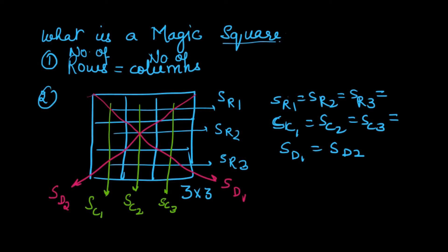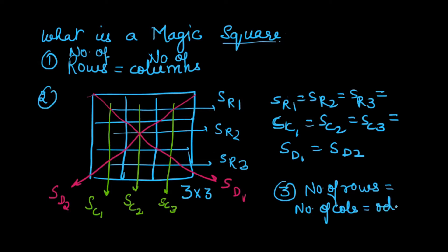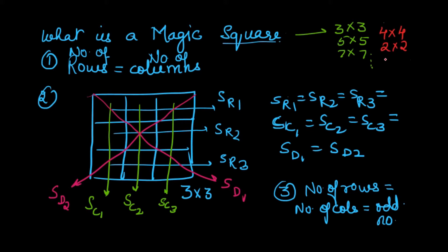The third and very important property of a magic square is that the number of rows or the number of columns — as they are both the same — should always be an odd number. So a magic square can be of size 3×3, 5×5, 7×7, and so on. You can't have a magic square which is 4×4, 2×2, or 6×6 — it cannot have an even number of rows and columns.